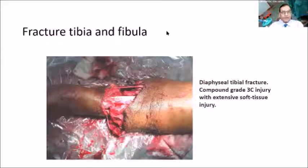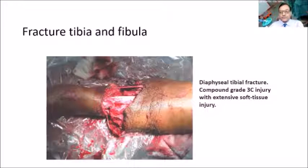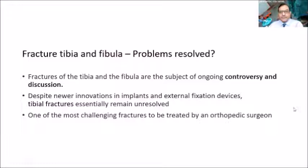Today's topic is fracture tibia and fibula. The reason is simple: tibia and fibula fracture is the commonest in the lower limb. It gets compounded very easily, so most of the open fractures we deal with involve the tibia and fibula. There is still controversy going on and it is not yet settled, and despite newer innovations in implants and external fixation devices, fracture tibia remains an unsolved problem in many cases.